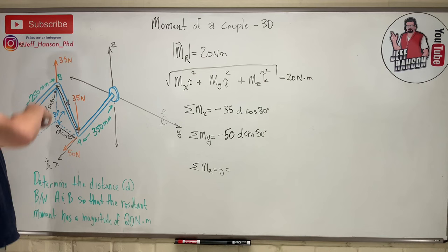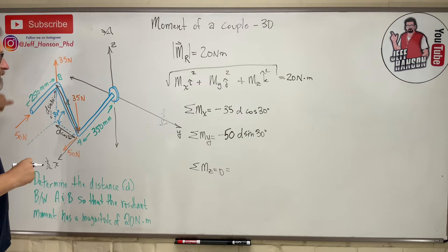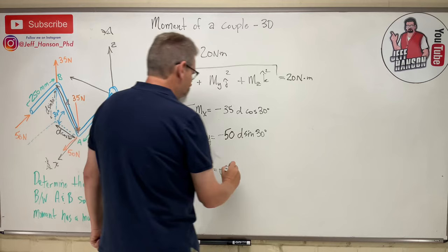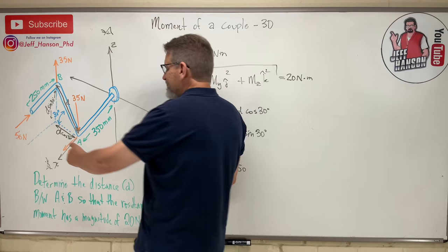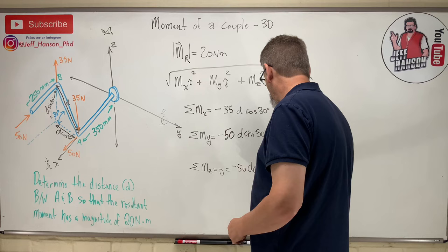Minus 50 times how far away from the z. Do you know? It's d cos 30, isn't it? Now all I have to do is plug this into that equation.